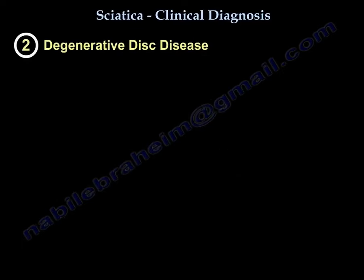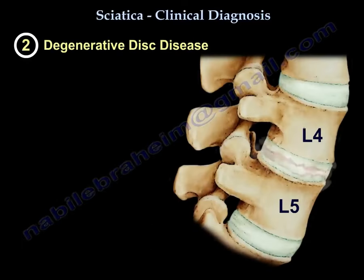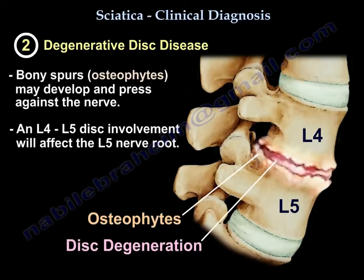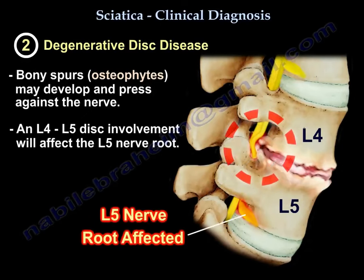Number two is degenerative disc disease. In this condition, bony spurs may develop and press against the nerve. If the disc involvement is at L4-L5 or L5-S1, then you will have L5 nerve root involvement.